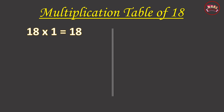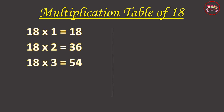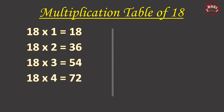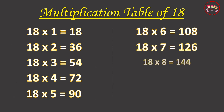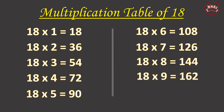Multiplication Table of 18. 18-1 is 18, 18-2 is 36, 18-3 is 54, 18-4 is 72, 18-5 is 90, 18-6 is 108, 18-7 is 126, 18-8 is 144, 18-9 is 162, 18-10 is 180.